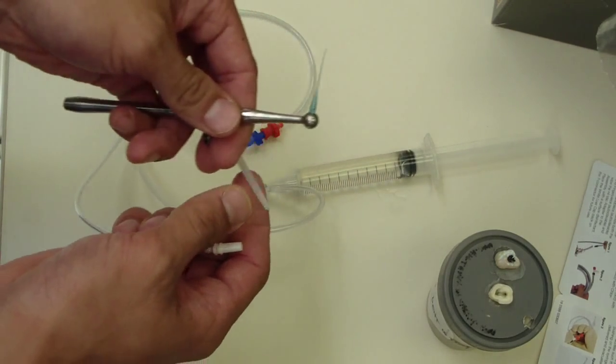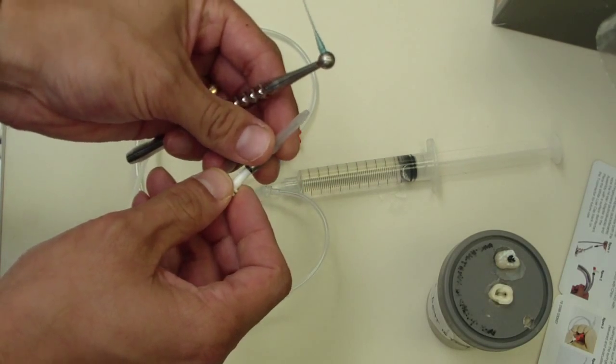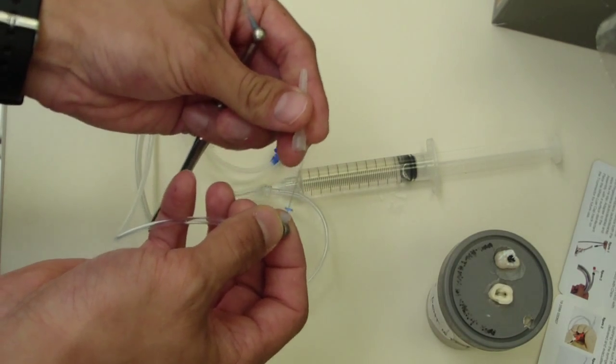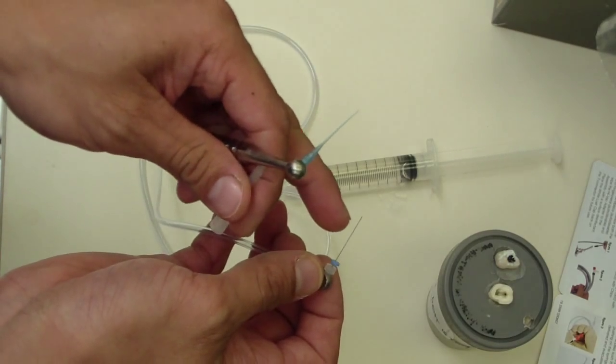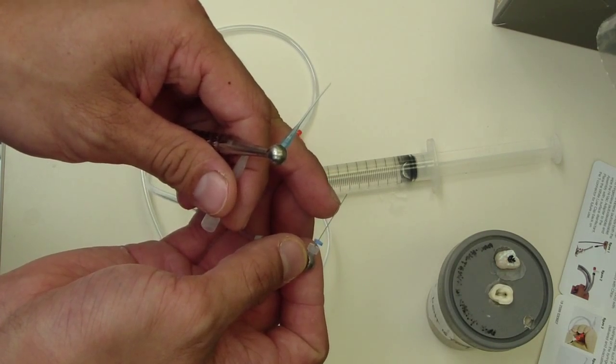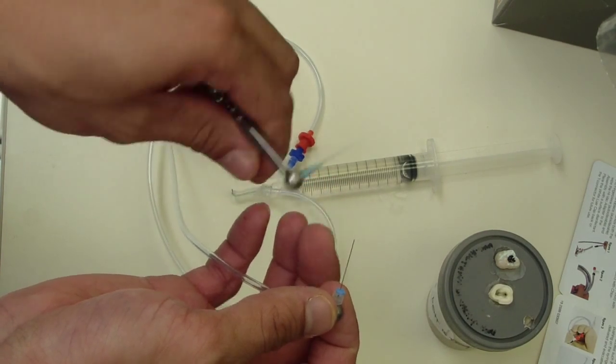So the micro essentially hooks on here on your suction. This is a 32 tip, same as a 32 size K file, and the macro is the same as a 50.